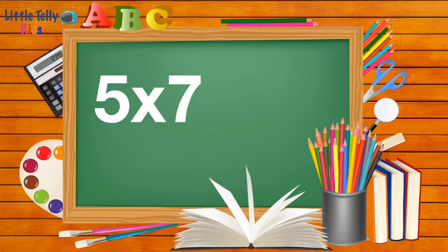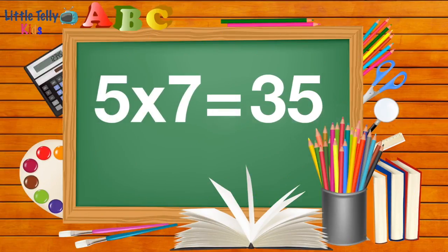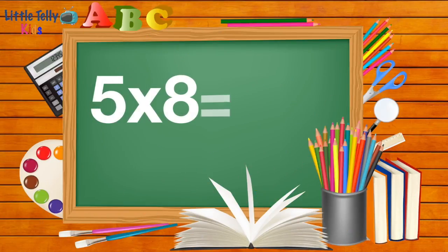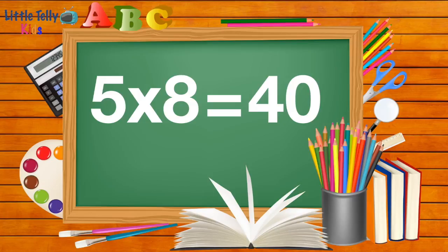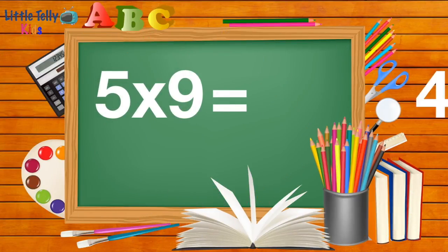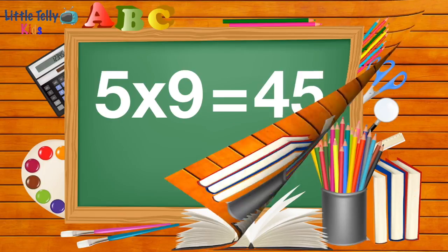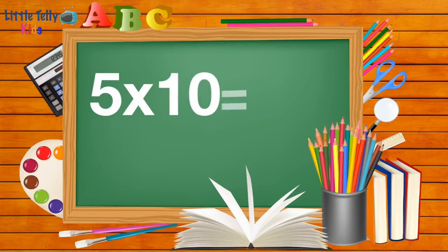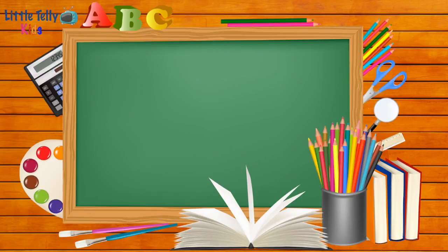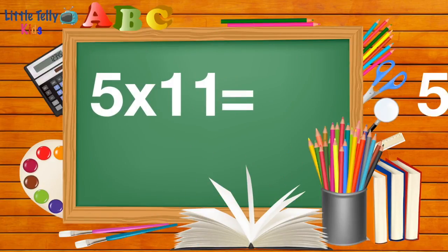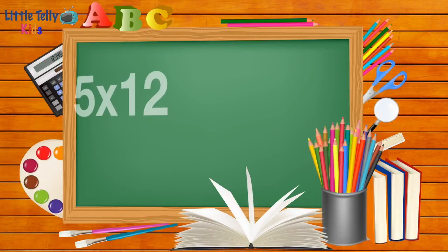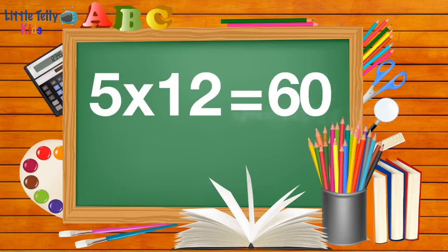5 sevens are 35. 5 eights are 40. 5 nines are 45. 5 tens are 50. 5 elevens are 55. 5 twelves are 60.